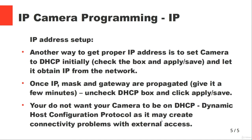Another way to get a proper IP address is to set the camera to DHCP. Check that box, connect the camera to the network, and let it obtain an IP automatically. Once the camera has its IP, subnet mask, and gateway, untick the DHCP box and click save/apply. You do not want to leave your camera on DHCP — dynamic host configuration protocol — as it may create connectivity problems with external access and access for the NVR.